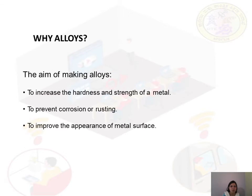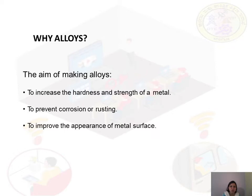Why are alloys important? Why don't we just use ferrous or non-ferrous metals? For engineering applications, alloys provide increased hardness, giving hard components with high resistance and good strength. Alloys also prevent corrosion — they have very good resistance to corrosion and do not rust. Additionally, the aesthetic appearance of the metal surface is good compared to other ferrous and non-ferrous metals.